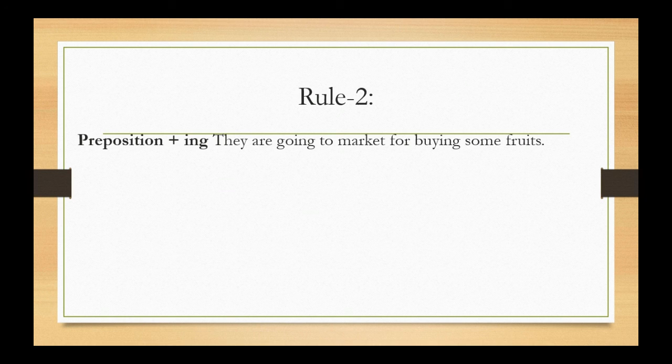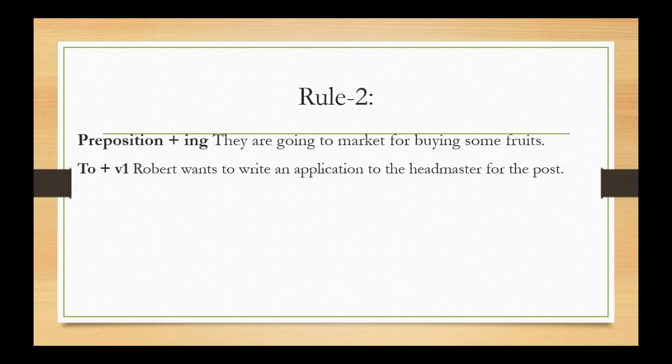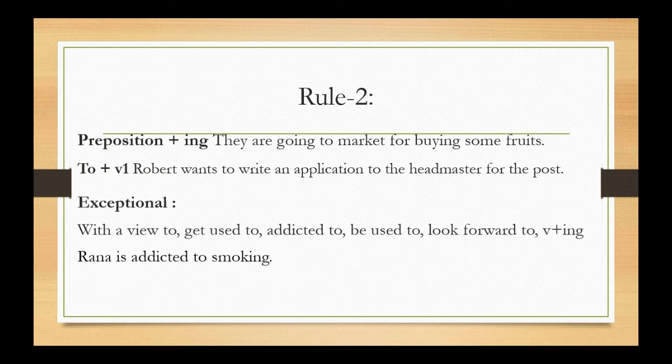Rule 3. Preposition plus ing: They are going to market for buying some fruits. To plus verb 1: Robert wants to write an application to the headmaster for the post.